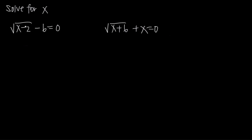In the first example we have the square root of x minus 2, and outside the square root we have minus 6 equals 0. We know it's a radical equation because a square root is involved. Our process is to isolate the square root, so we add 6 to both sides to cancel the negative 6, leaving us with the square root of x minus 2 equals 6.